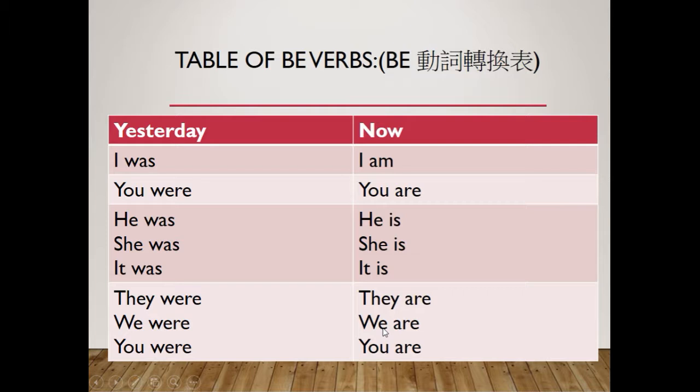When it's in the past tense: 'I am' becomes 'I was', 'you are' becomes 'you were', 'he is' becomes 'he was', 'she is' becomes 'she was', 'it is' becomes 'it was', 'they are' becomes 'they were', 'we are' becomes 'we were', and 'you are' becomes 'you were'.